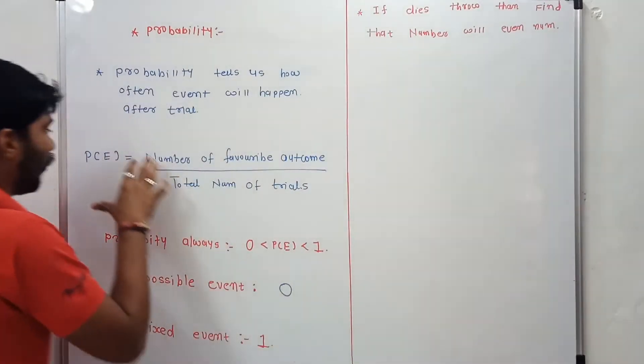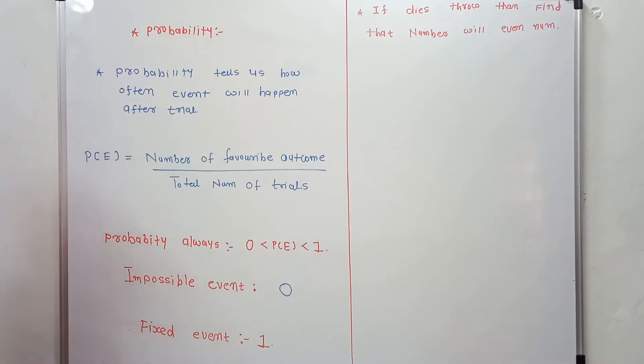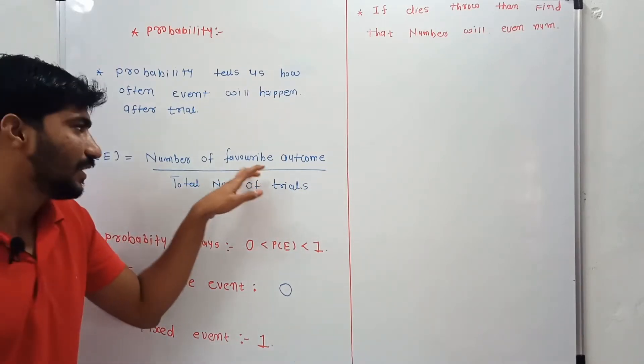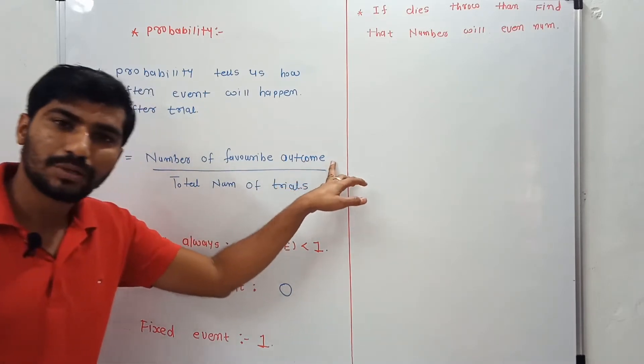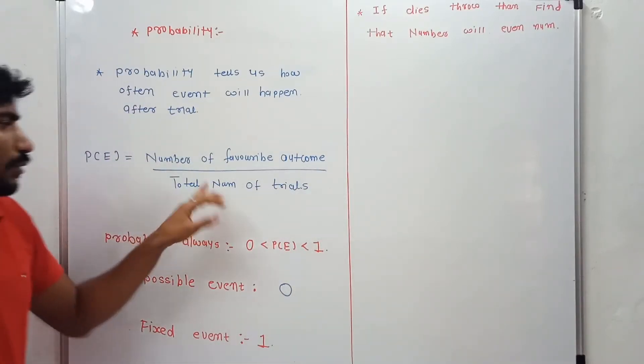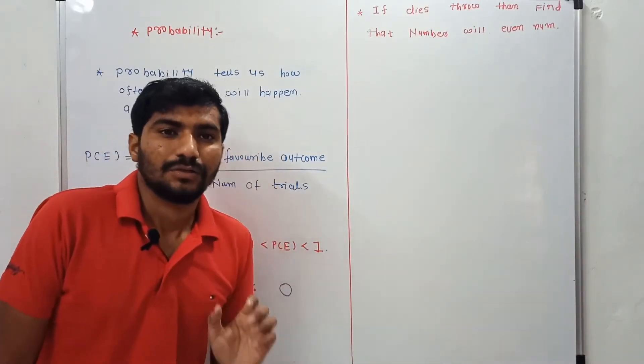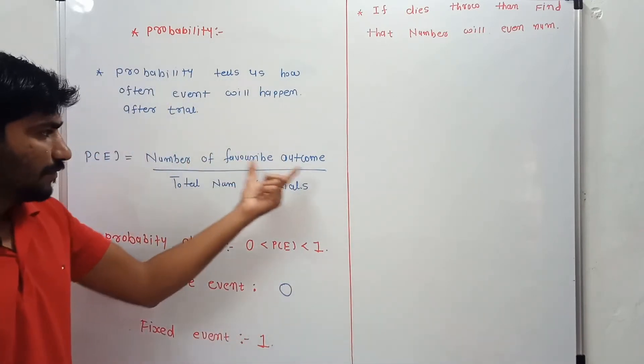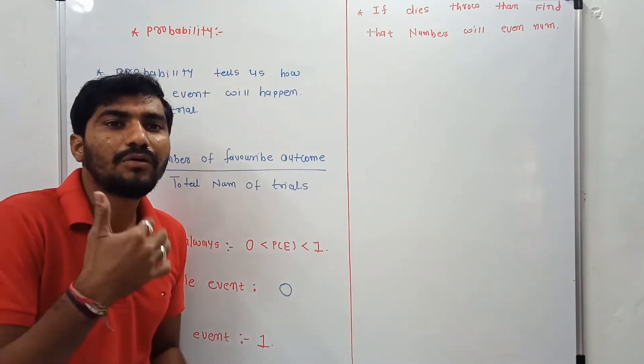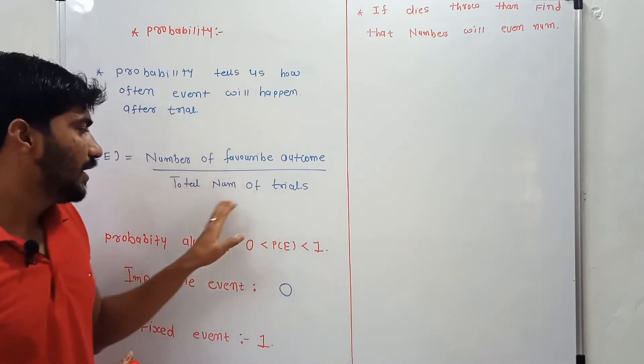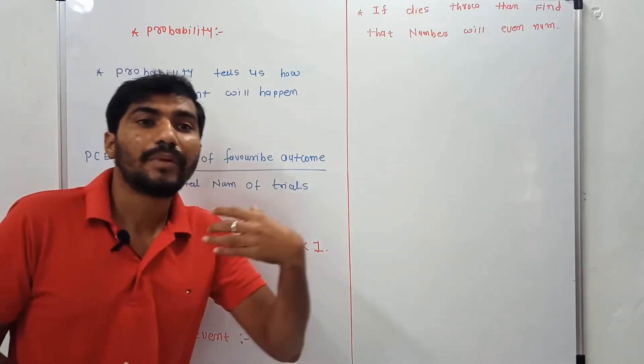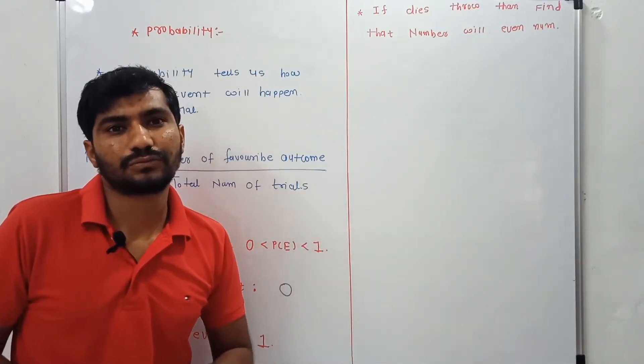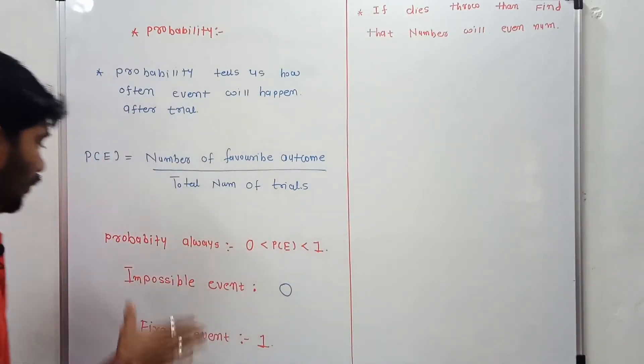So what are the formulas of probability? The formula of probability is number of favorable outcomes divided by total number of trials. Number of favorable outcomes means how many results we want divided by number of trials, how many attempts we will give.